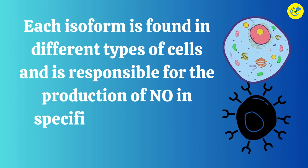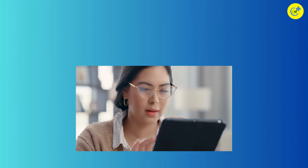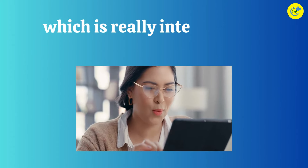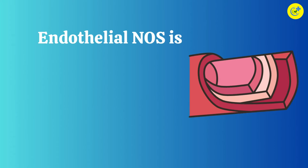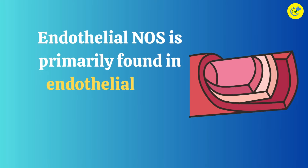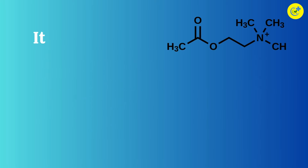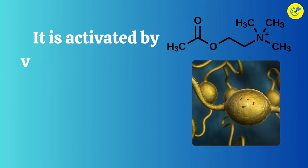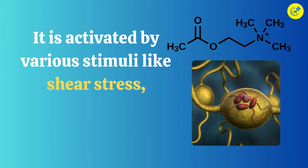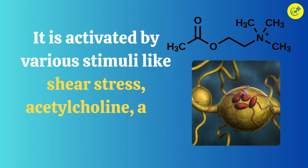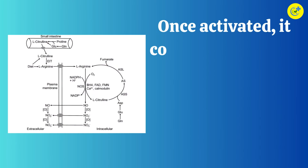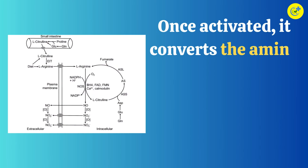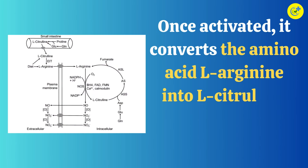Each isoform is found in different types of cells and is responsible for the production of NO in specific physiological contexts, which is really interesting to study about. Endothelial NOS is primarily found in endothelial cells lining the blood vessels. It is activated by various stimuli like shear stress, acetylcholine, and certain hormones.